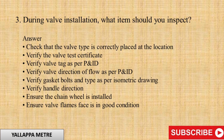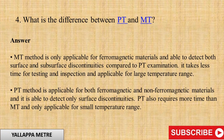Question 3: During valve installation, what items should you inspect? Answer: Check that the valve type is correctly placed at the location, verify the valve test certificate, verify valve tag as per P&ID, verify valve direction of flow as per P&ID, verify gasket bolts and type as per isometric drawing, verify handle direction, ensure the chain wheel is installed, ensure valve flange face is in good condition.